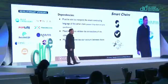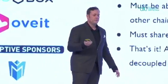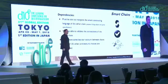The last dependency is that they have to share the same key pair account — the same account between two chains — which means they need to use the same cryptographic algorithm to generate these accounts. But that's it. These are the only three dependencies that we need. All other architectural choices are decoupled.